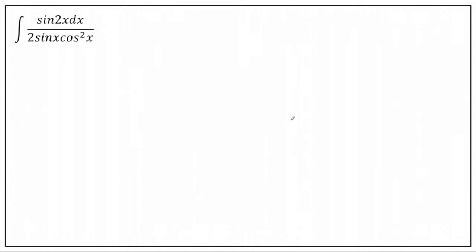Let's proceed to another example. The problem is the integral of sin(2x) dx over 2 sin(x) cos²(x). At first glance you might consider this a very complicated problem, but it is not. All we have to do is review our knowledge of trigonometric identities. As you can see in the numerator, we have sin(2x) — that's a double angle function — and we need to recall the formula for sin(2x).